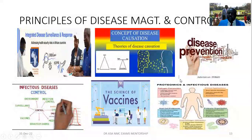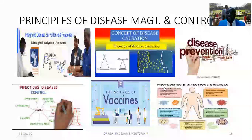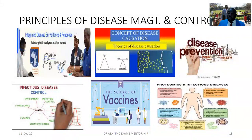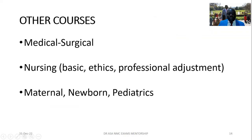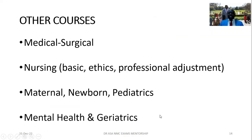Those are the content areas you should revise. There is a book available in this area — a link will be provided. You can also look for 'Public Health in the Tropics,' a textbook that will help you prepare. Other courses the public health nurse must study include medical surgical nursing, basic ethics, professional adjustment, obstetric/maternal and newborn care, pediatrics, and mental health nursing.